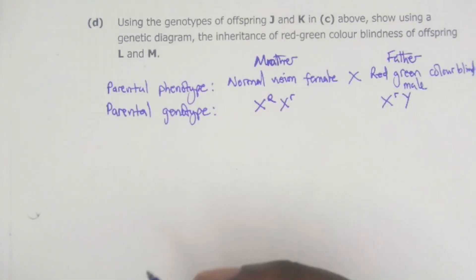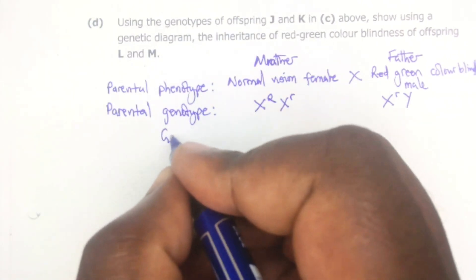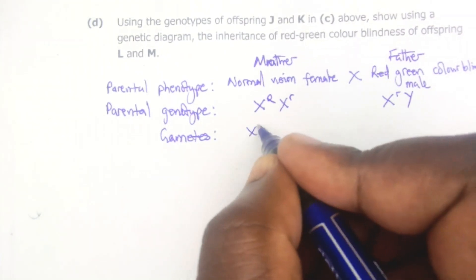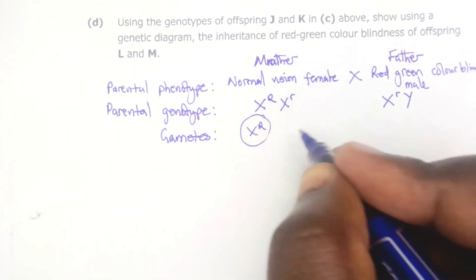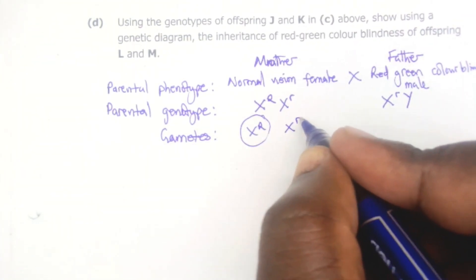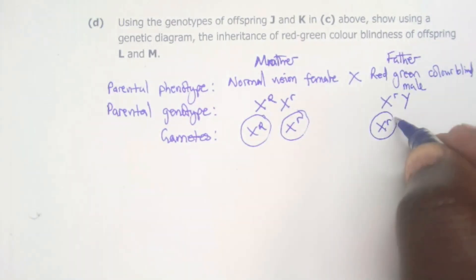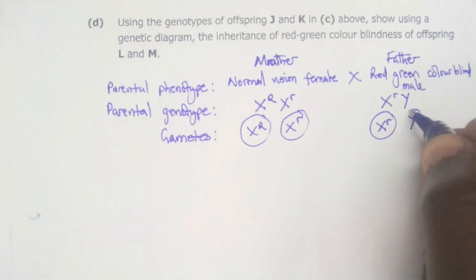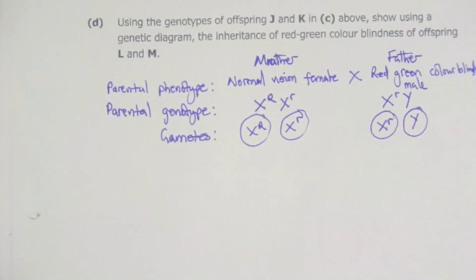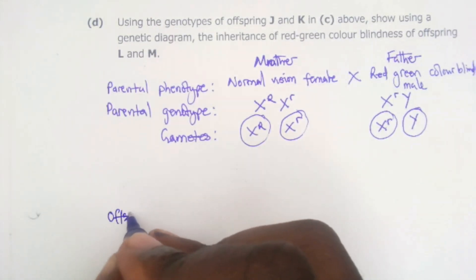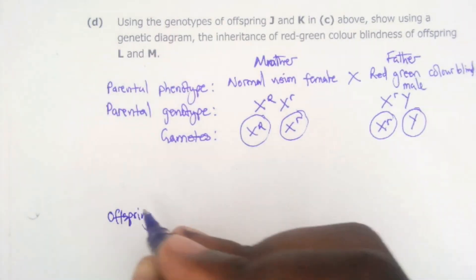Step three is to write the gametes. From the mother we get gamete X^R (circled to show it is a cell) and gamete X^r (circled). From the father we get gamete X^r (circled) and gamete Y (circled). Step four is to show random fertilization, which gives us the offspring genotypes.